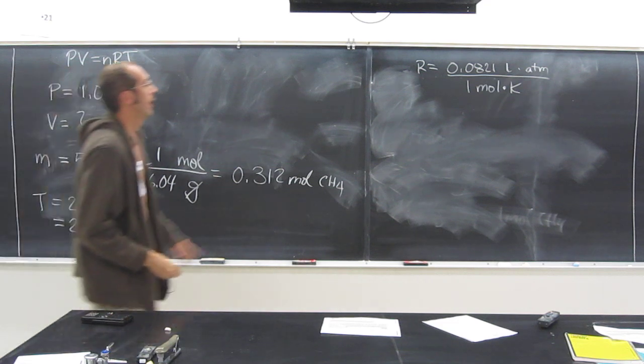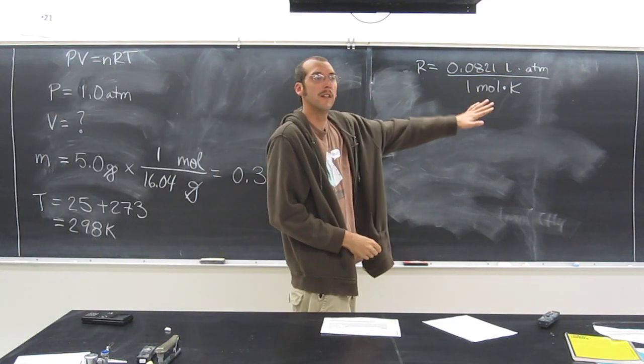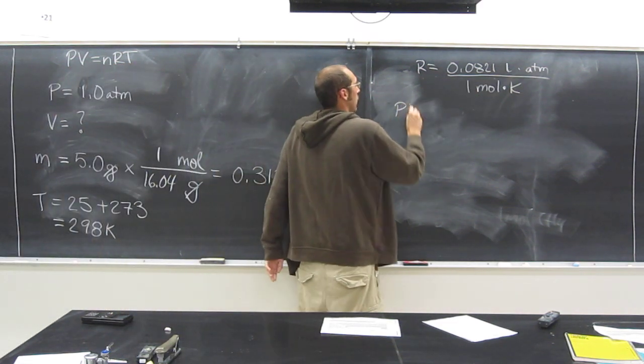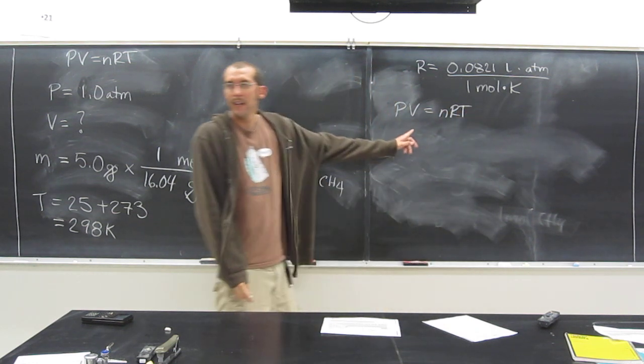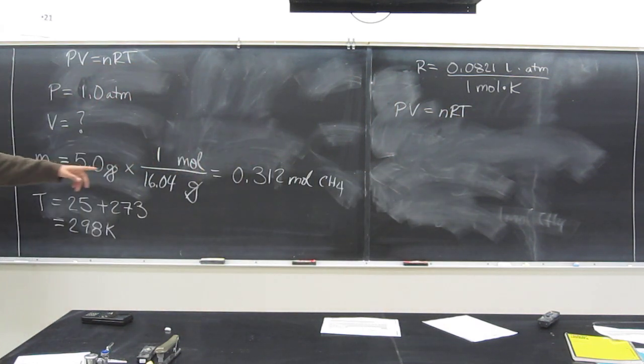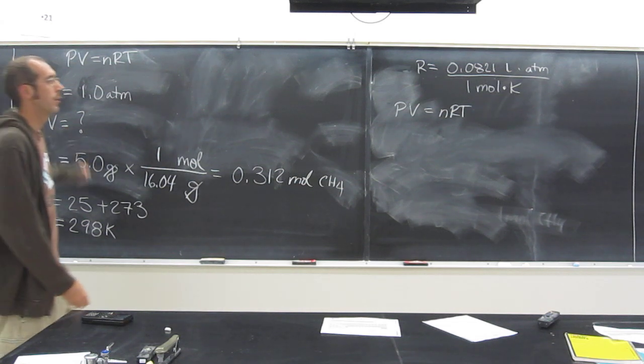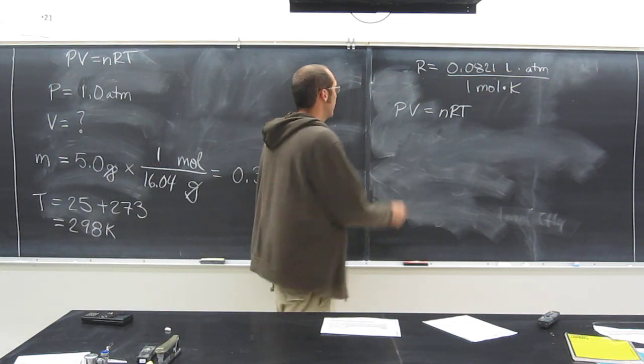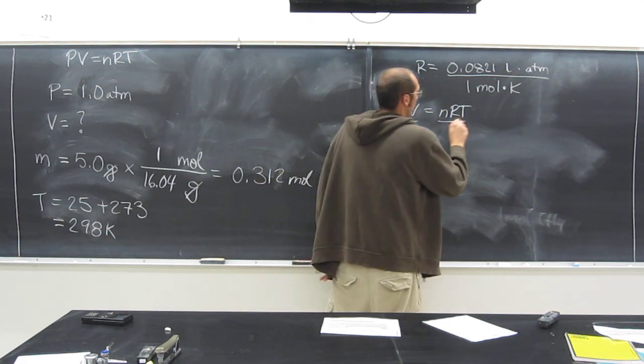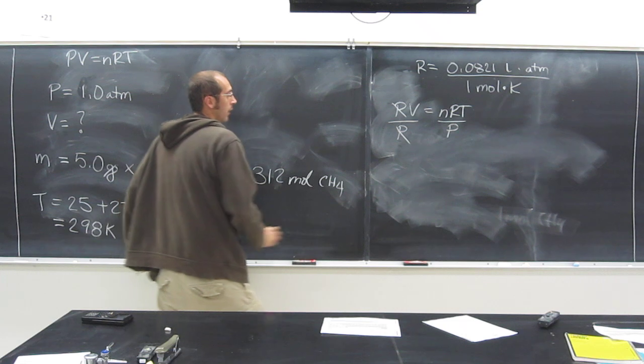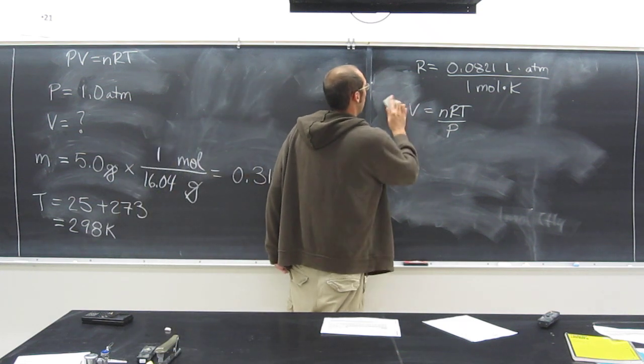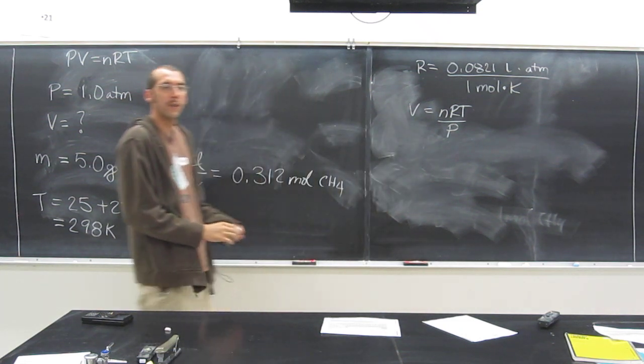So let's just write PV equals nRT, and we want to isolate the V variable. So that's what we want. How do we do that? Divide both sides by P. Cancel, cancel, like that. So that's our new equation.